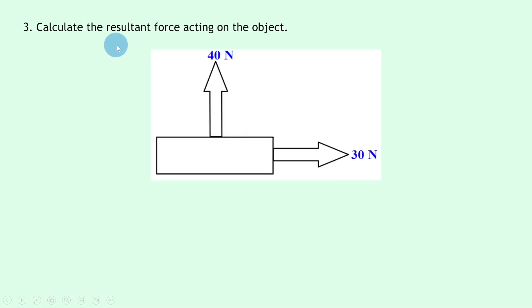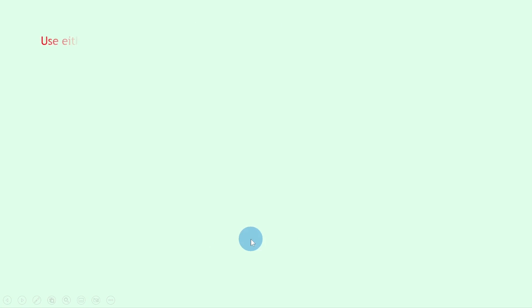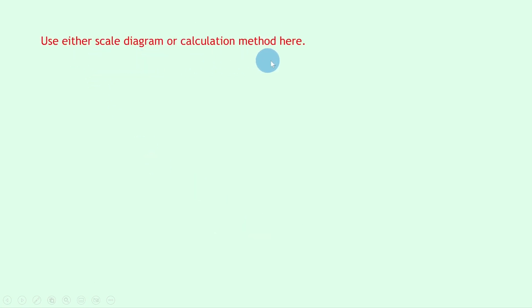Question three says to calculate the resultant force acting on the object. This time we've got 40 newtons upwards and 30 newtons to the right. This is not as easy as dealing with forces in one dimension — this time we're adding force vectors at right angles. We want to add force vectors nose to tail and then use either the scale diagram or the calculation method.